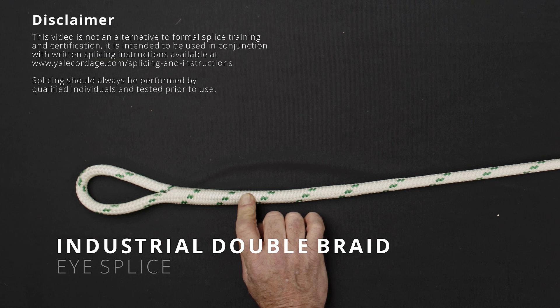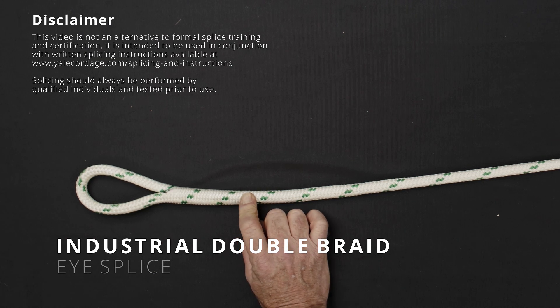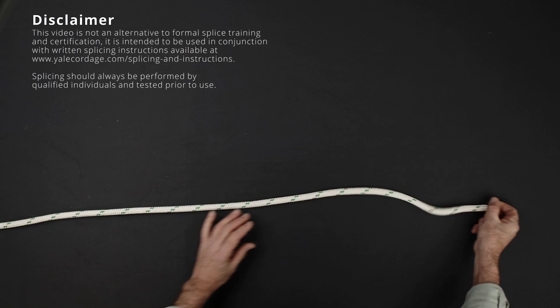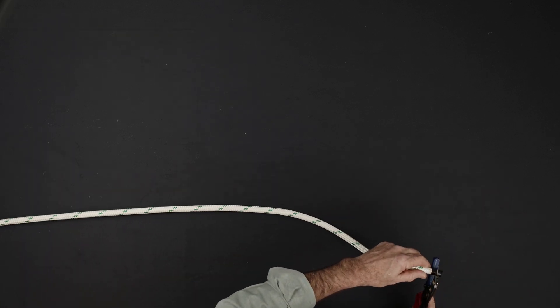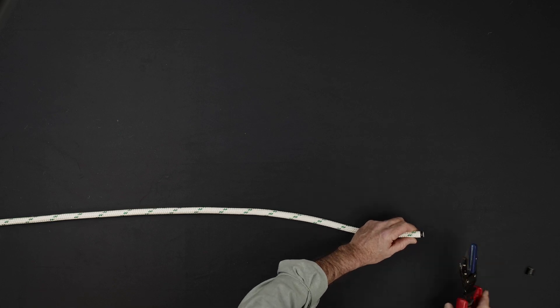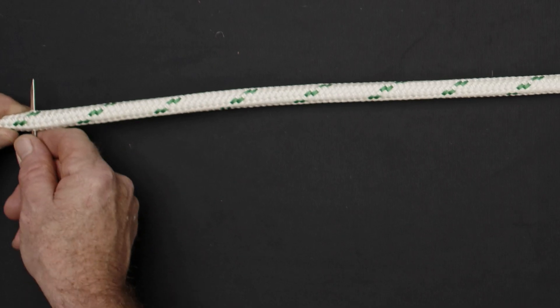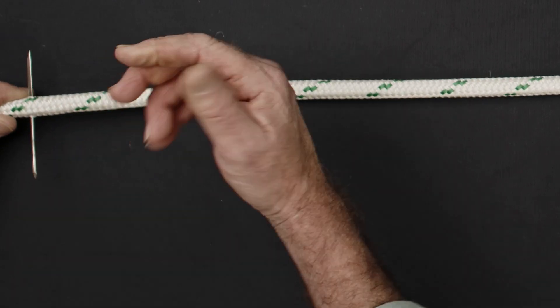This video covers the I-Splice procedure for Yale Cordage Industrial Double Braid products. If the end of your rope is sealed or taped, cut the end off. Use a needle to secure the core and sleeve more than six feet from the end to be spliced.